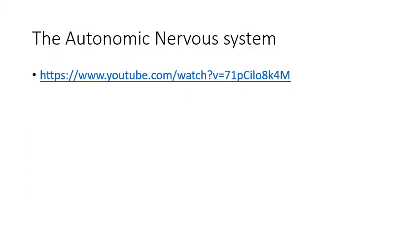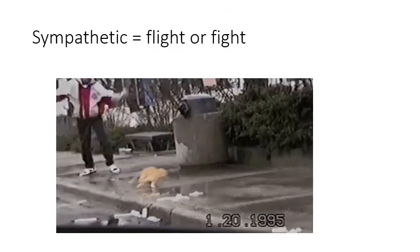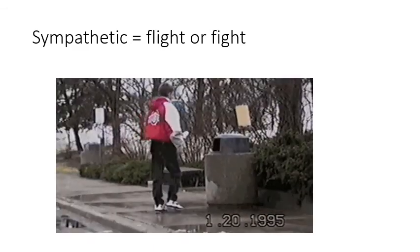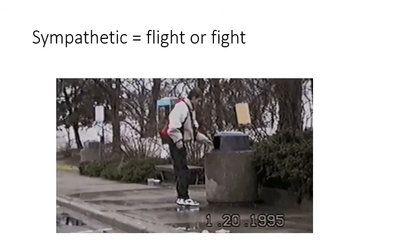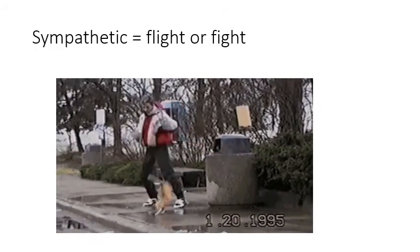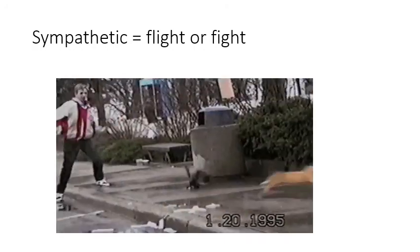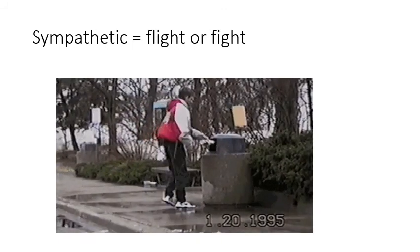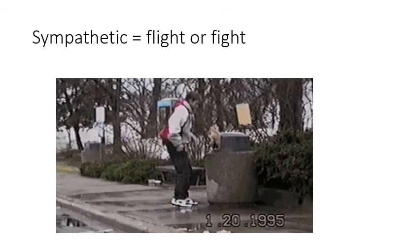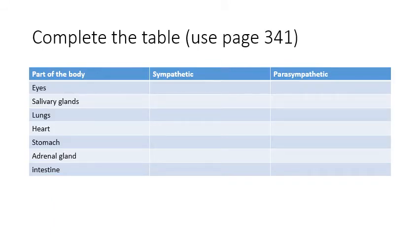The first task is to watch a video — just the first half — where it talks about the parts of the autonomic nervous system. When you finish that, please come back to the PowerPoint. From that video, you should have the idea of the sympathetic nervous system being involved in fight or flight: when surprised, your heart beats faster, eyes dilate, breathing gets more rapid, and the bronchioles in your lungs get wider to allow more oxygen in. Your next task is to complete a table using information from the textbook on page 341.